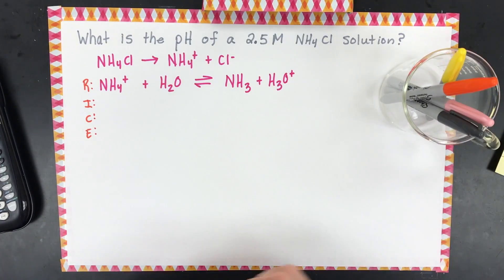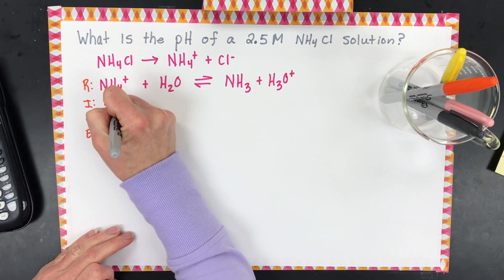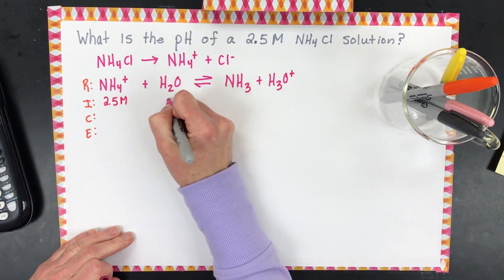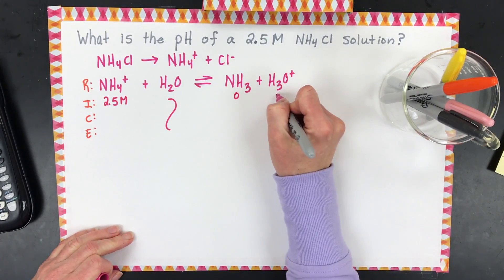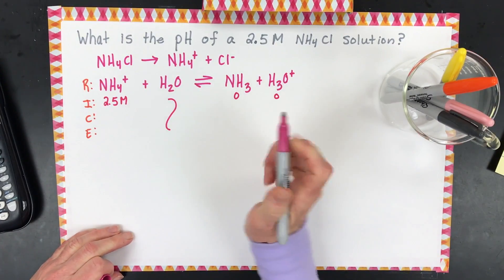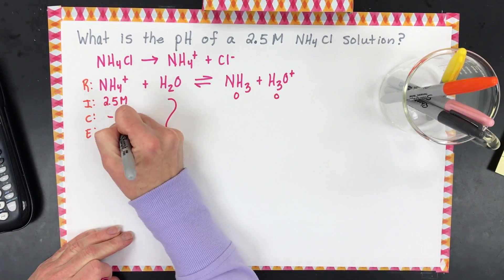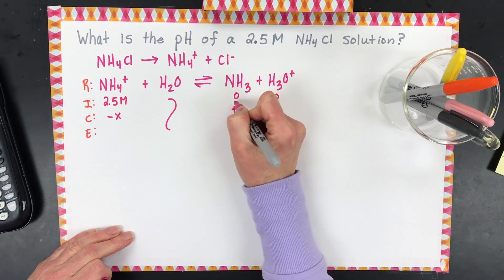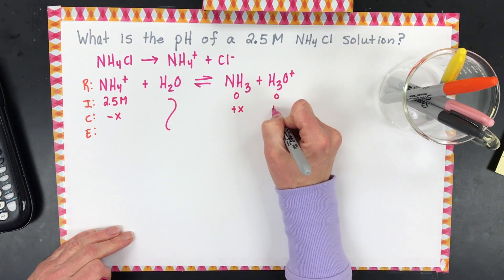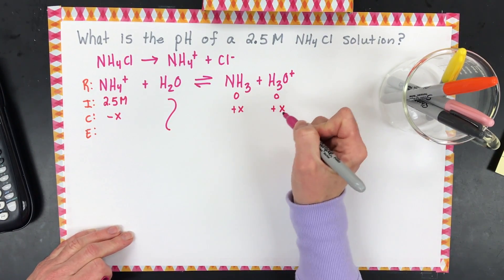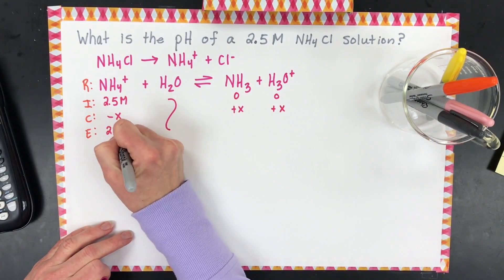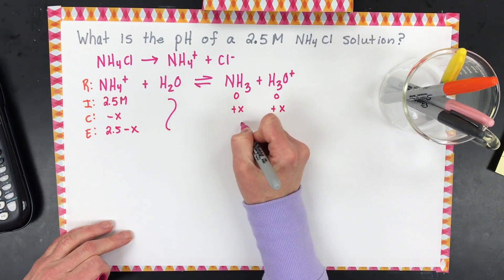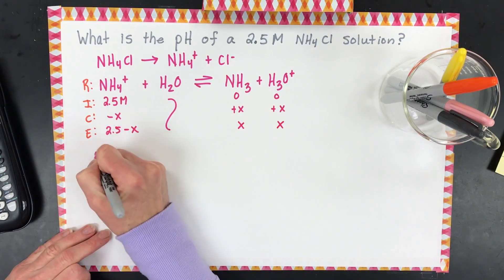We put our initial concentration, which is 2.5. Don't worry about the concentration of water, and say there's none of the products yet. Then some amount of these ammonium ions are going to turn into ammonia and hydronium. You end up with 2.5 minus X for ammonium and X for each product.